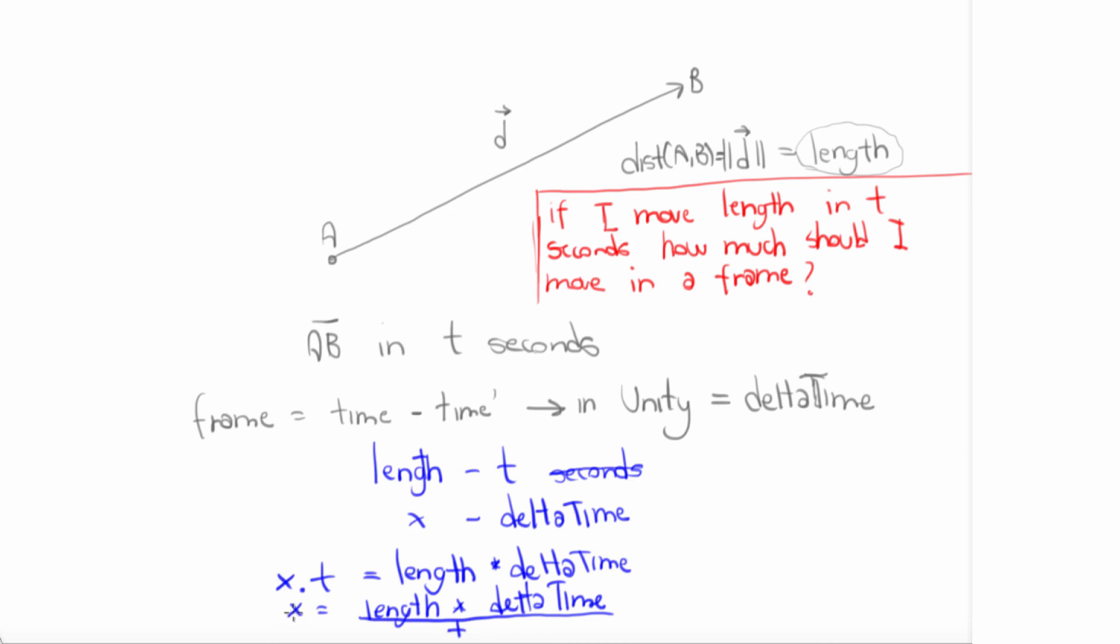How am I supposed to move by a value? I need to move by a vector. We already know the direction we want to traverse, the direction is given by vector D, the difference between B and A. There must be a relationship between X and D in order to make our object move from A to B in T seconds.